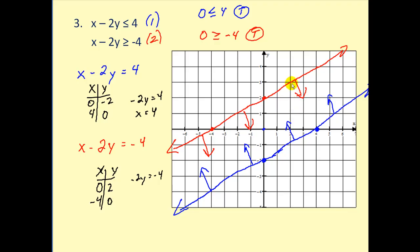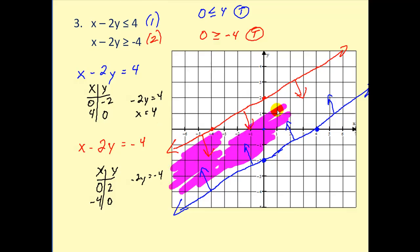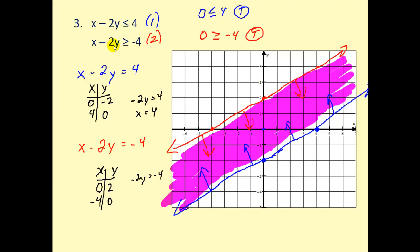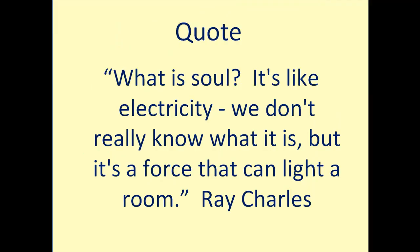You can see that the double shaded region is the region between these two lines. We can make that region very clear by shading just the double shaded region. If you find the arrow method a little easier to use, I would encourage you to do so. This region is the solution to the system of linear inequalities. I hope you found this video helpful. Thank you very much for watching.